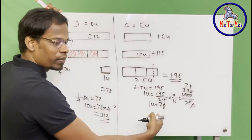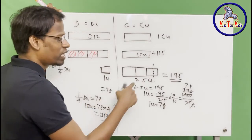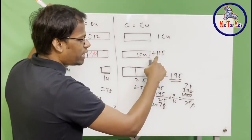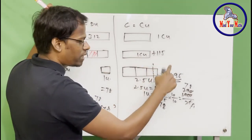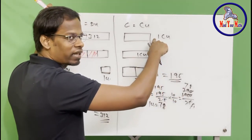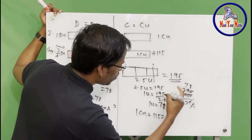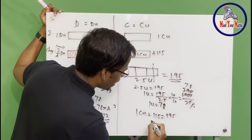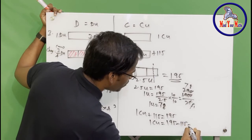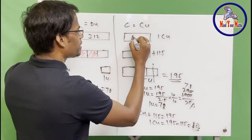For the chicken side, it's straightforward. After adding 115 chickens, we got 195. So one chicken unit plus 115 equals 195, which means one chicken unit equals 195 minus 115, which equals 80. So the original number of chickens was 80.